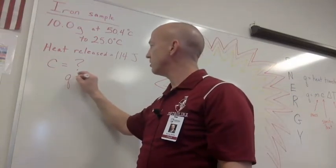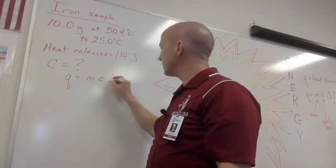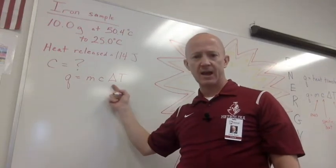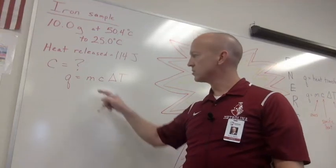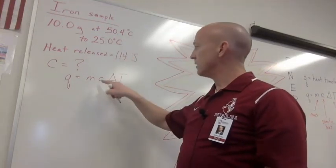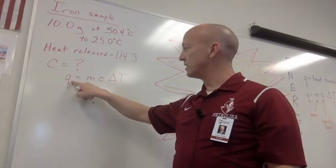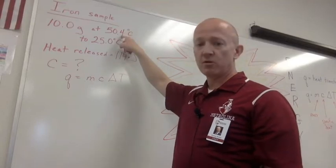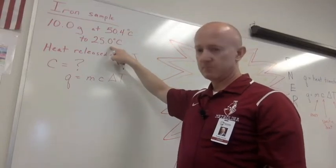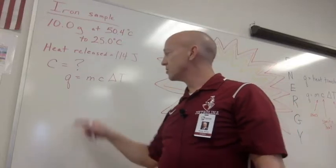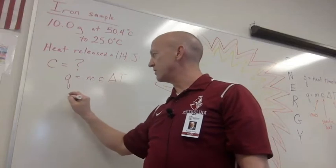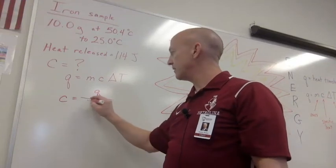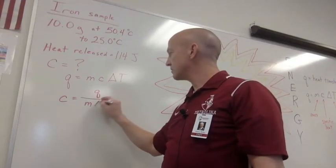In this case, let's see if we can figure out what the specific heat of iron is. We're going to use our same equation, q equals m times c times delta T. You know what, between you and me I sometimes say q equals mcat just to kind of help me remember. So the mass is 10 grams, the specific heat is what we're looking for. The heat is 114 and the temperature change would be 50.4 minus 25, that's 25.4 degrees. So we're going to rearrange this and solve for specific heat.